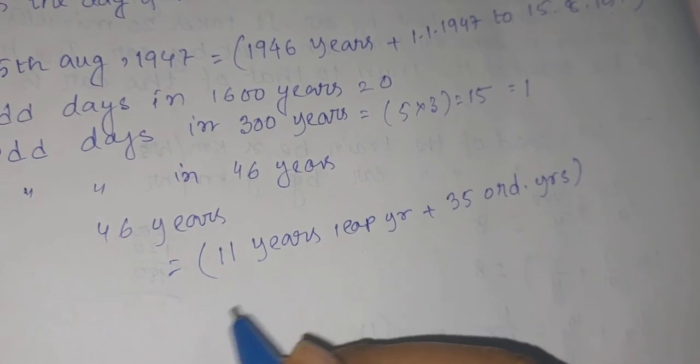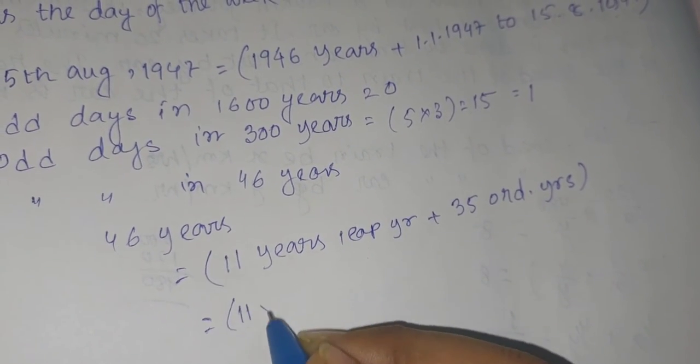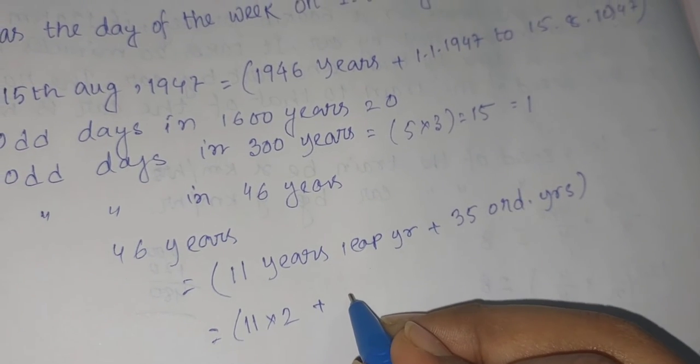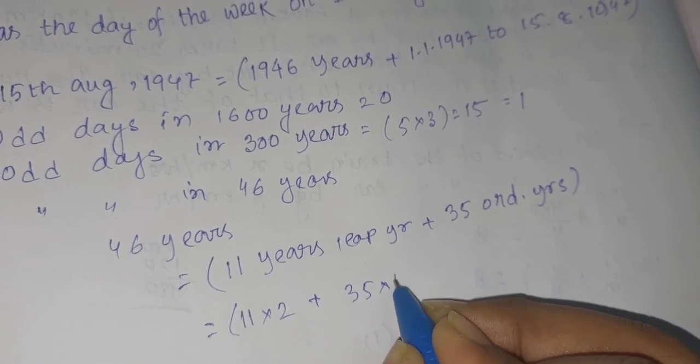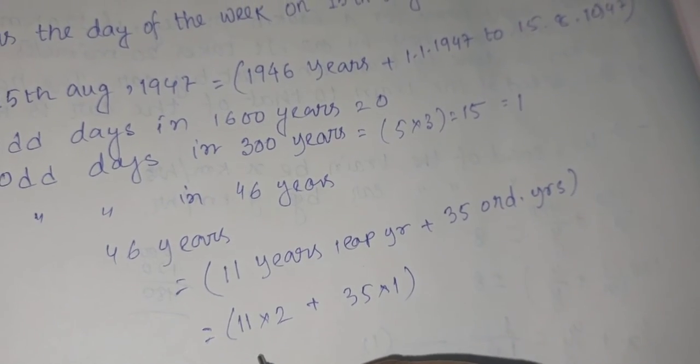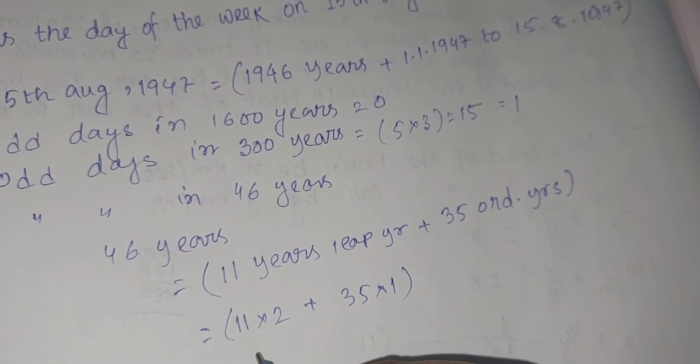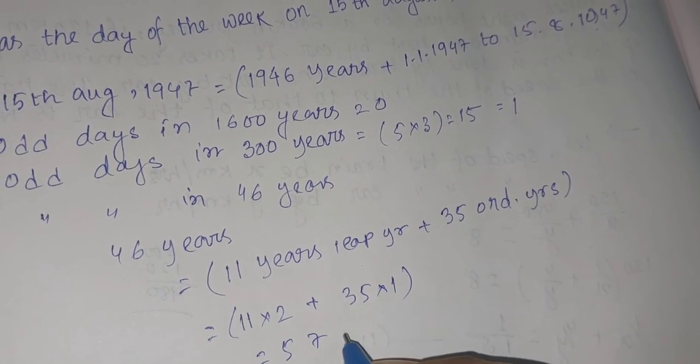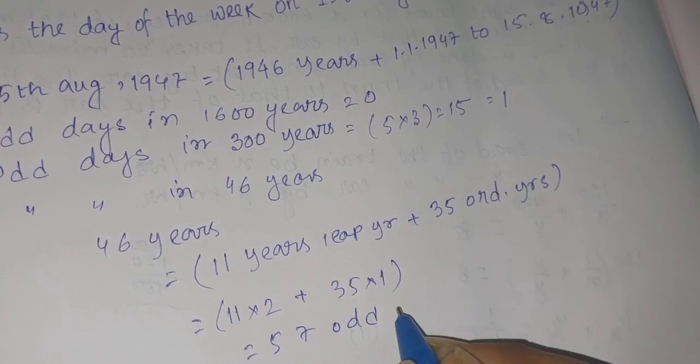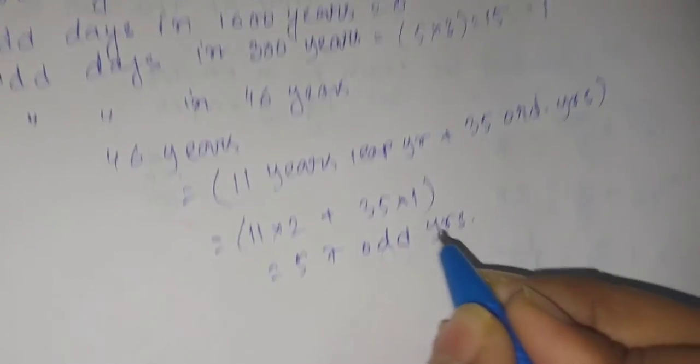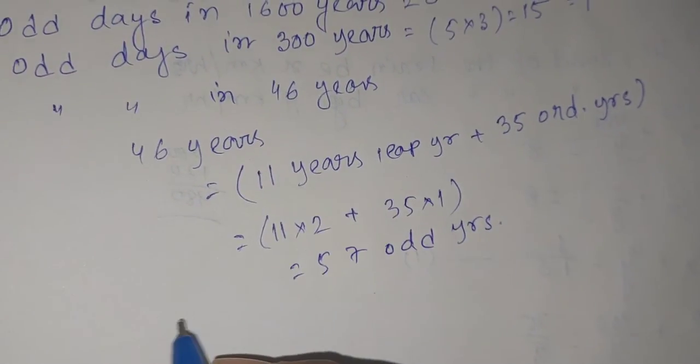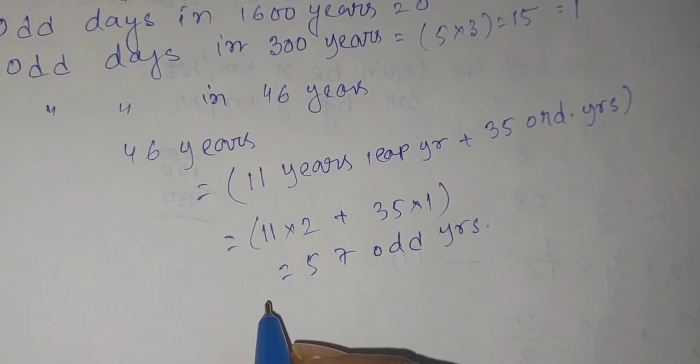For leap years the number of odd days is 2. That means 11 into 2, plus for ordinary years that is 35 into 1. So how many are there? That is 57 odd days.